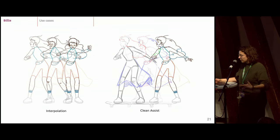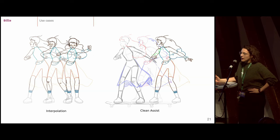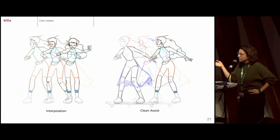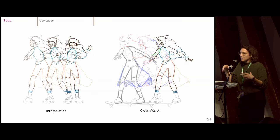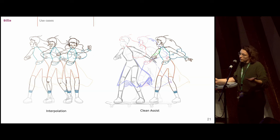Two more development ideas we haven't started yet: first, interpolation — a big topic in 2D. The idle part might be easier to test interpolation on, while the trick part comes with more challenges because the character makes a turn. Second is clean assist: going from rough to ink, maybe not automatically but with tools to help speed up that step. Since we're providing all fabrication steps, it could be very useful for testing these algorithms.